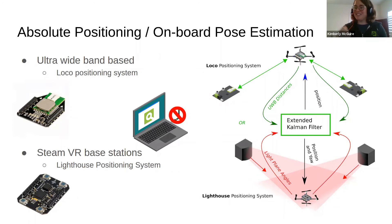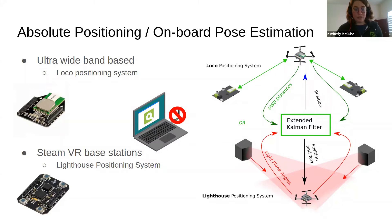For absolute positioning with onboard pose estimation, you have ultra-wideband systems. We have our own system called the Local Positioning System. If the CrazyFlie has a Loco deck, it can fuse the ultra-wideband ranges between itself and nodes located on the ground, and infer its own position entirely on the onboard state estimator — no external computer needed to transmit pose back to the drone. The TED talk earlier also used an ultra-wideband system. Another very interesting one is our Lighthouse positioning system based on SteamVR base stations for virtual reality gaming.